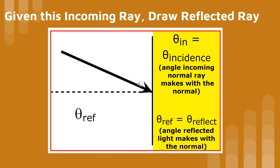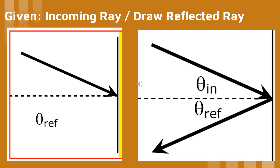Since the angle of reflection equals the angle of incidence, we would first have to measure the angle of incidence using a protractor. The angle of incidence is measured from the normal line to the incoming ray. Here is what the reflected ray would look like. The incident ray and the reflected ray make the letter V.